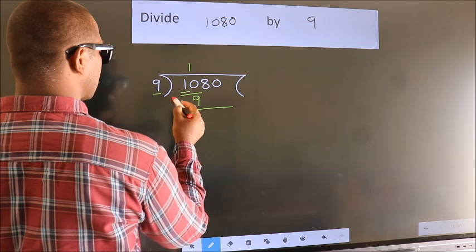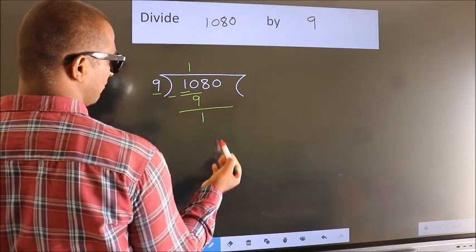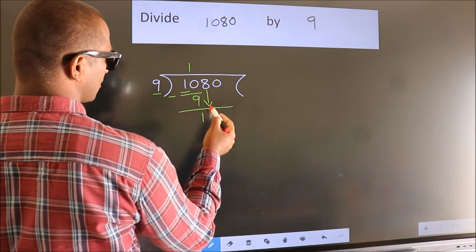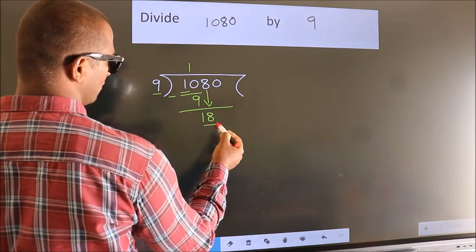Now we should subtract. We get 1. After this, bring down the beside number, so 8 down. So 18.